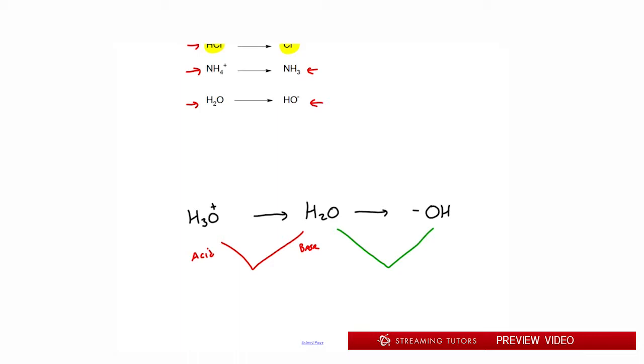In the first case, this is the acid because it has one extra H compared to water. This is the base. However, in the next example, water is the acid because here, water has an extra H compared to the right side, which is a base, conjugate base. So these are conjugates, these two pairs, in relation to water, the left and right side of it are conjugates to water.